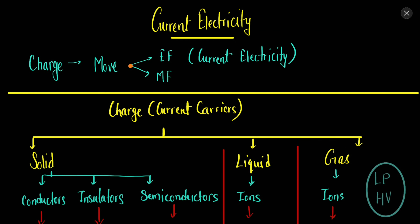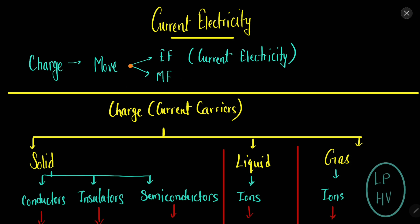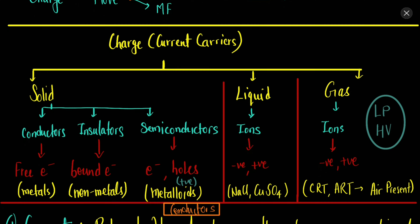In this new chapter, let us try to understand what happens if the charge starts to move. In the previous chapters we discussed about charge at rest. When the charge starts to move, first an electric field is generated and secondly a magnetic field is also generated. We will discuss the magnetic field in the next chapters, but for now we will focus on moving charge producing electric field. That electricity is called current electricity. When charge was at rest, it was static electricity.